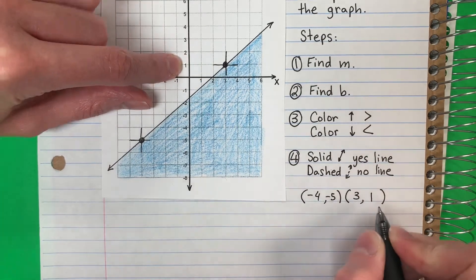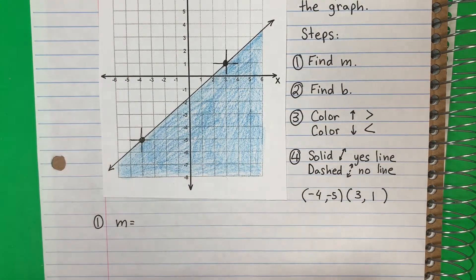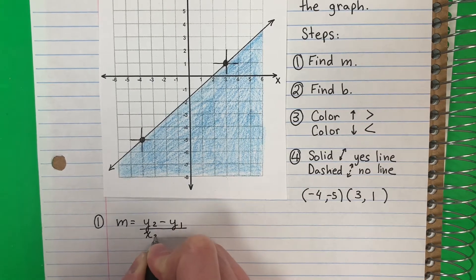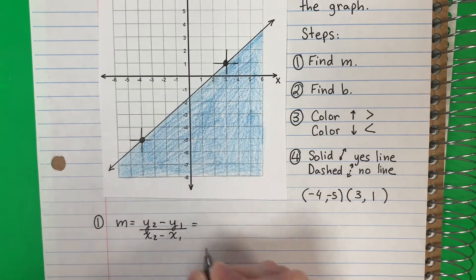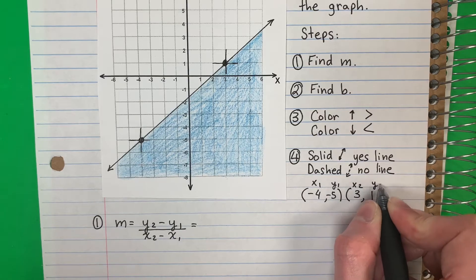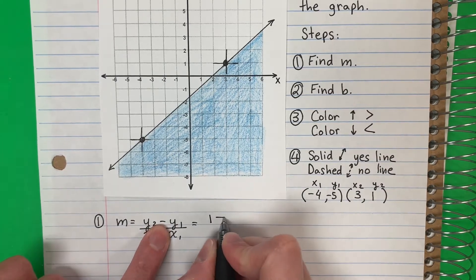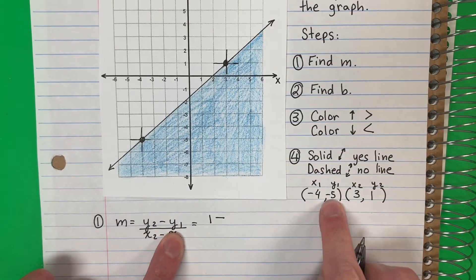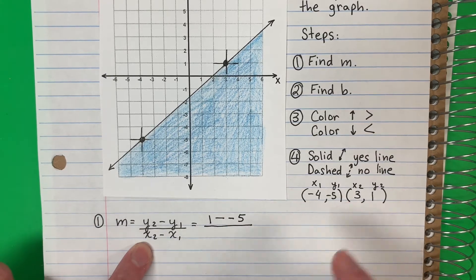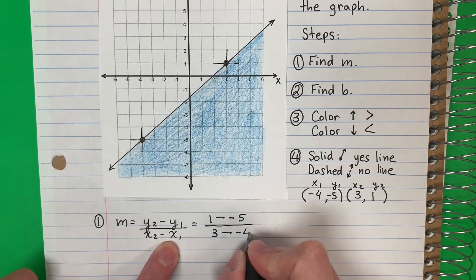Part one, to find the slope m, I need the formula m equals y2 minus y1 divided by x2 minus x1. So I'm gonna do x1, y1, x2, y2. First is y2, so that is 1. Minus y1 is negative 5, divided by x2 is 3, minus x1 is negative 4.